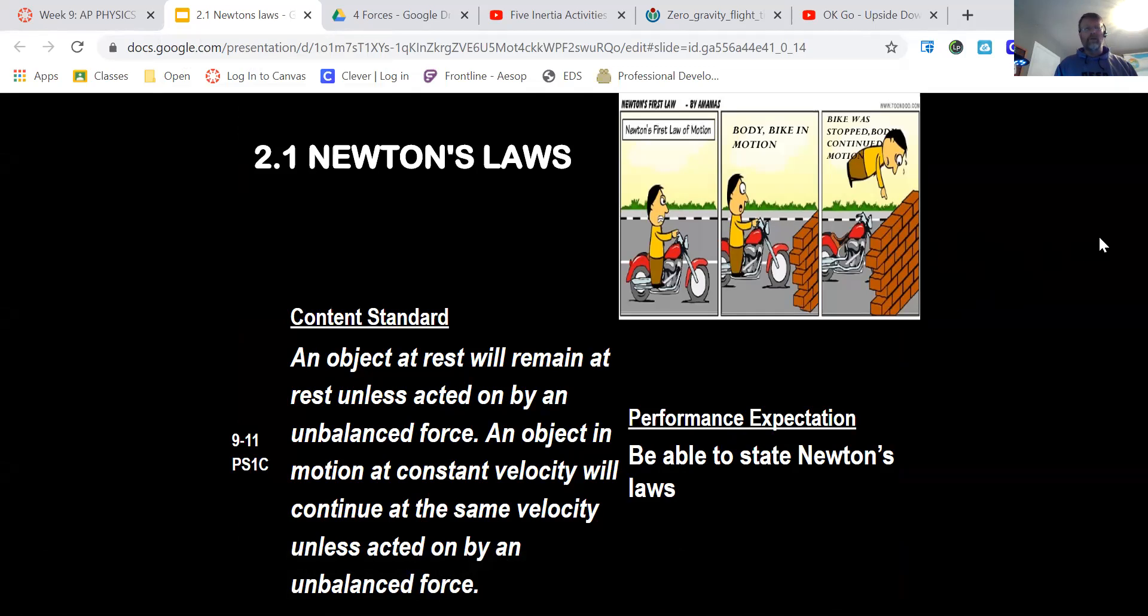That term unbalanced force: an object in motion at constant velocity will continue at the same velocity until acted upon by an unbalanced force. Constant velocities by the way can be any number including zero; zero velocity is a constant velocity.